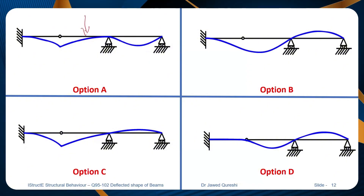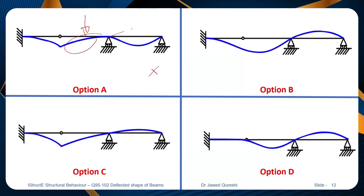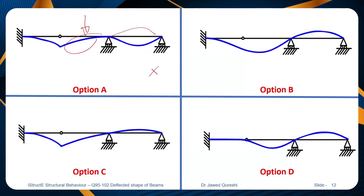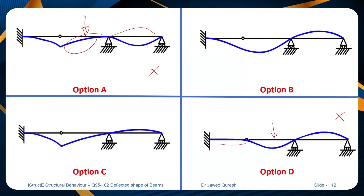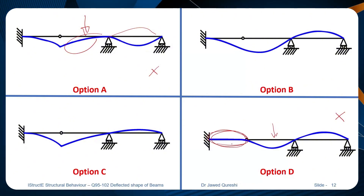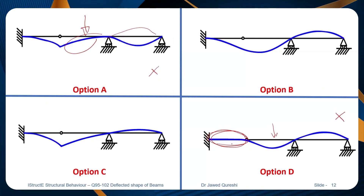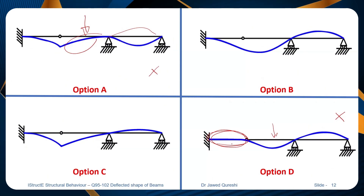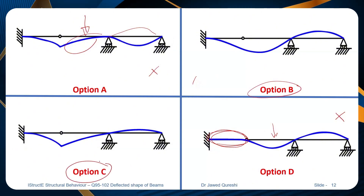There are four options to choose from and I will eliminate a few options which do not make sense. For example, loading is applied over here. Option A is completely wrong because when we apply load here, this portion should go up. Option D is wrong as well because when you're applying loading here, there is no deformation happening at that point. I'm a little bit confused between option B and C. I posted this question on LinkedIn and people were confused between these two options.